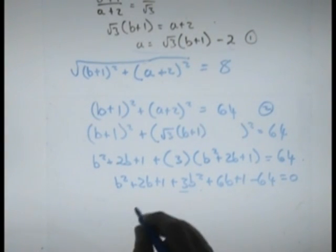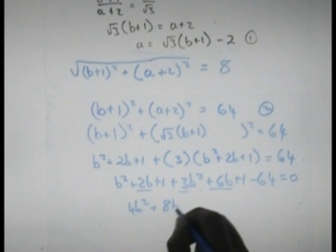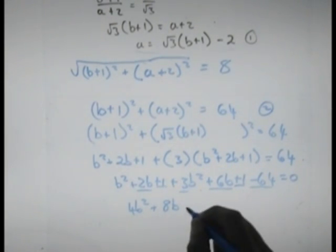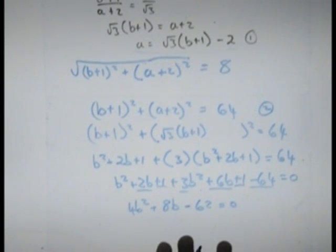B squared plus 3b squared is 4b squared plus 2b plus 6b is plus 8b plus 1 plus 1 is plus 2 minus 64 is minus 62 equals 0. Divide through by a common 2. That means that 2b squared plus 4b minus 31 is equal to 0.